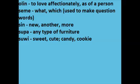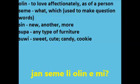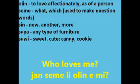Now let's look at 'olin'. You may be thinking that I cheated you with the whole 'there's no verb to like in Toki Pona' — well, there isn't. 'Olin' is not used for things; it's used only when speaking about a partner or lover, as in 'jan seme li olin e mi?' meaning 'who loves me?'